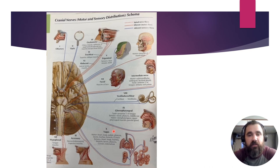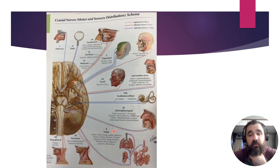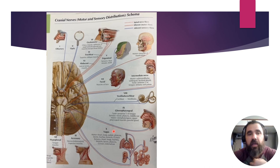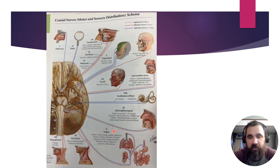Cranial nerve nine, the glossopharyngeal nerve, carries sensory information from the posterior one-third of the tongue and somatic sensation to the pharynx — you test nine and ten together with the gag reflex. It also controls the parotid salivary glands and brings in afferent information from the carotid sinus and carotid bodies, where blood pressure, pH, carbon dioxide, and oxygen levels are measured.